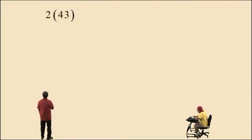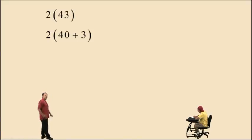Now, 2 times 43. Well, here we'll go ahead and rewrite the 43 in expanded form as 40 plus 3. And now we will use the distributive property. 2 times 40 is 80, plus 2 times 3 is 6. And 80 plus 6 is 86. There you go.